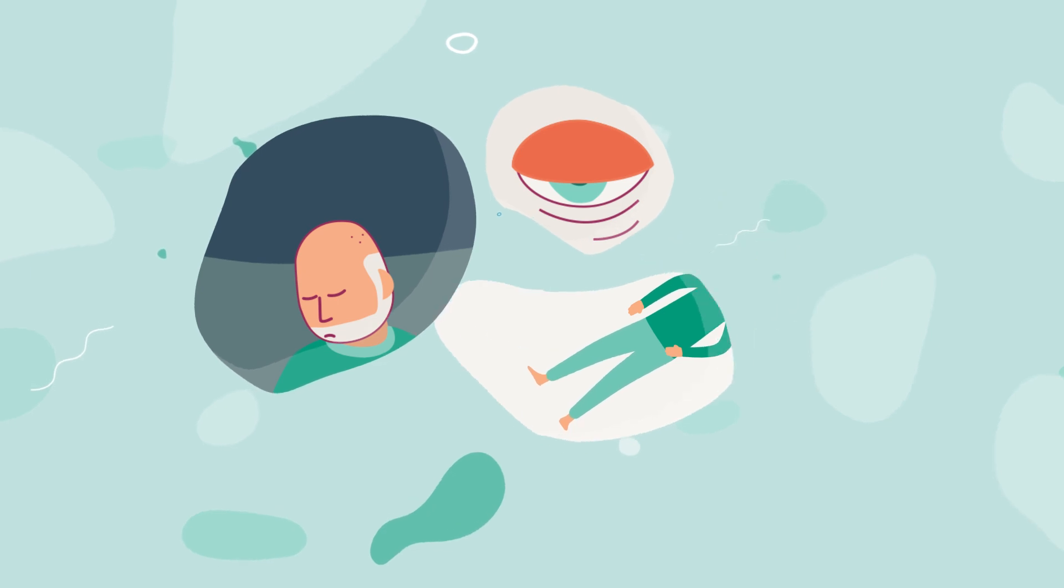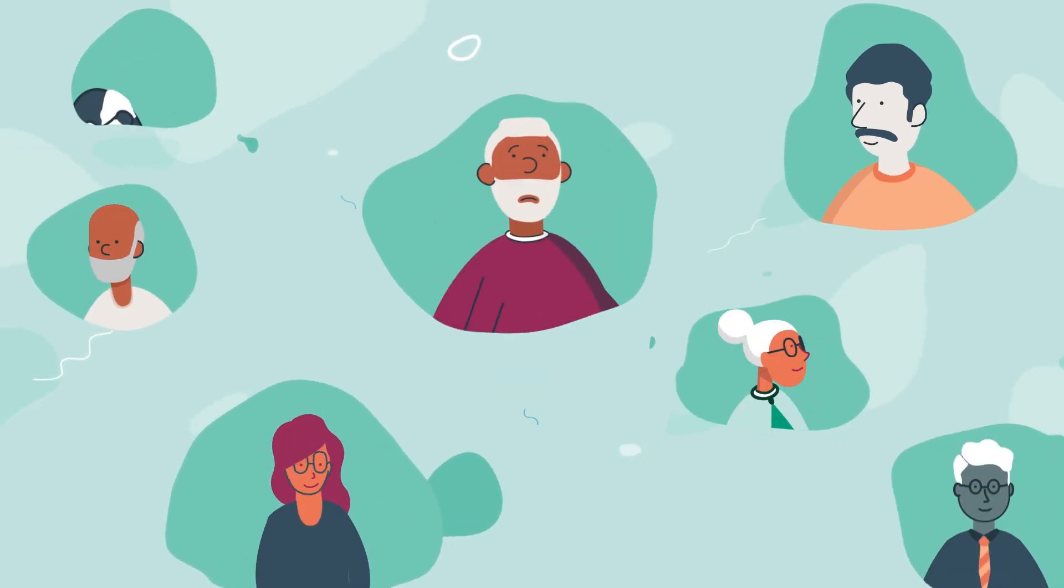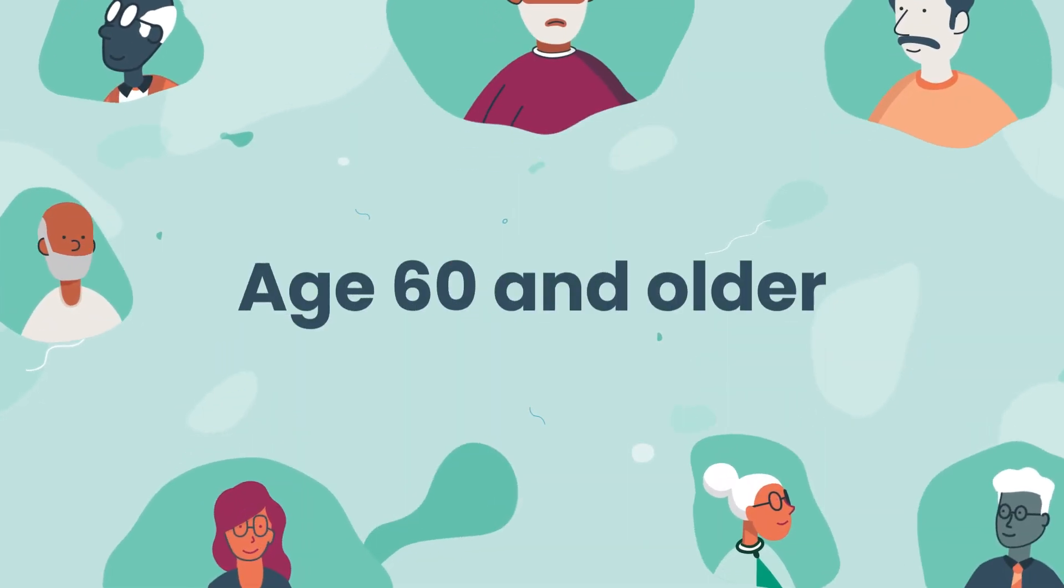The exact reason why neurons become impaired is still unknown. However, the risk of developing the disease increases with age, with symptoms typically appearing around age 60 or older.